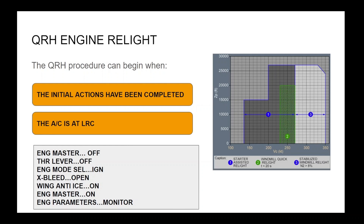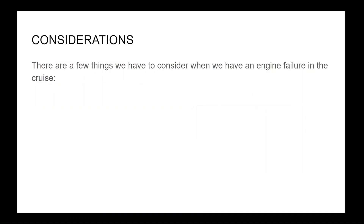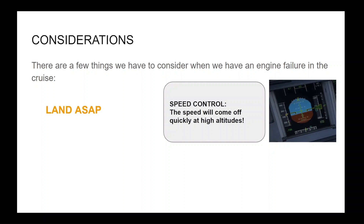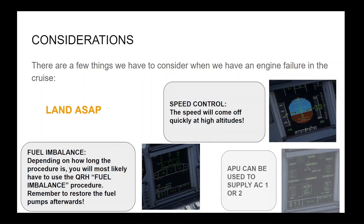If there is no relight, the engine is to be switched off as detailed in the QRH. There are a few things to consider when we have an engine failure in the cruise: a land ASAP in amber; at high altitudes the speed will drop quickly with one engine inoperative, so speed control is vital; fuel imbalance — depending on how long the procedure is, you will most likely have to use the QRH fuel imbalance procedure, and remember to restore the fuel pumps afterwards; and the APU is available to supply AC bus 1 or 2.